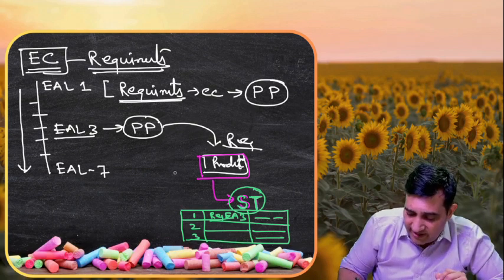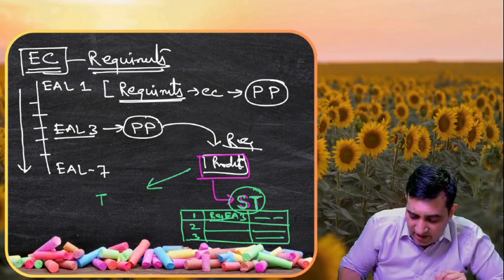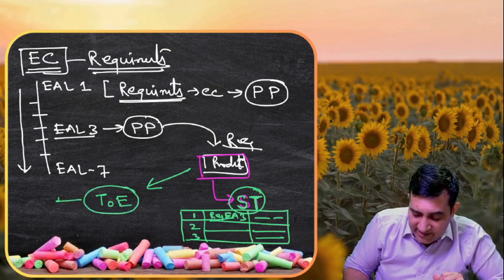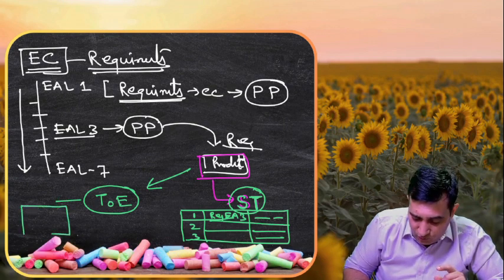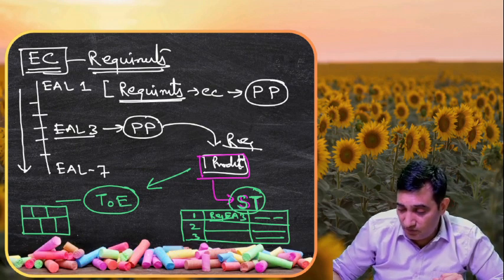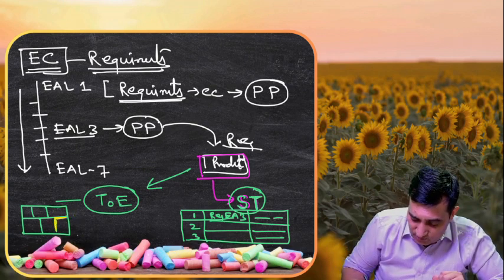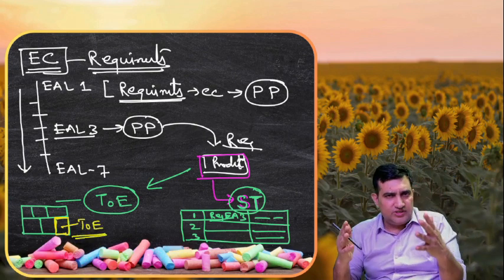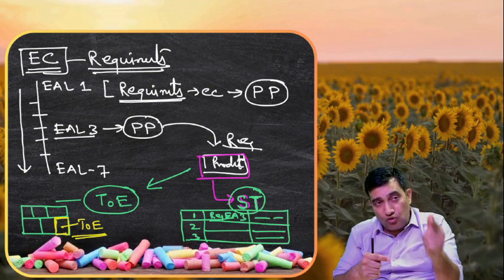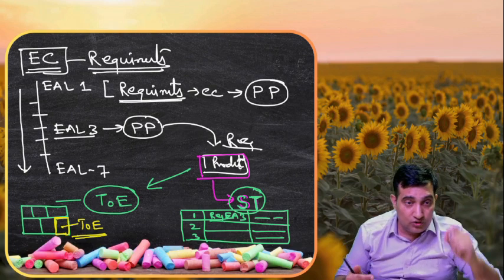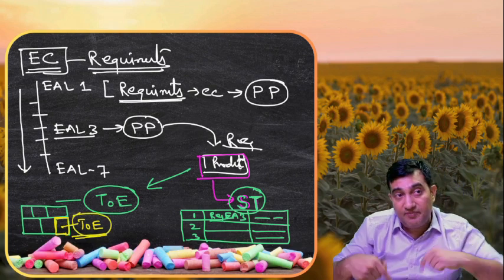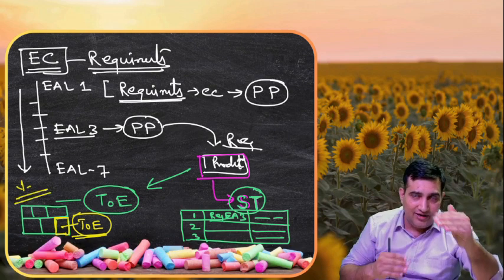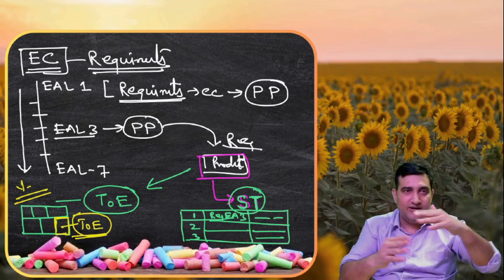And the product itself, it is called as Target of Evaluation. And in many cases, let's say I told you right, the product can be huge and this entire product might not be in the scope of testing. They might call this small portion as the Target of Evaluation. So you also have to see, whenever you want to check something, you want to purchase something which is Common Criteria certified, go onto their website, download the entire documentation to see what actually is the Target of Evaluation. Because the company might claim that my entire product is Common Criteria certified, whereas when you go in detail you will only find a small portion of it which is there as part of it.